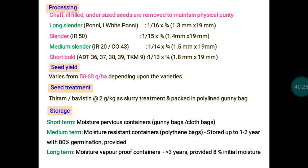In paddy, different grain types exist: long slender, medium slender, and short bold. In Tamil Nadu, long slender is the most preferred for consumption — examples include Ponni and Improved White Ponni. Long slender grain dimensions are 1.3 mm × 19 mm. Short bold type, commonly called 'gundu rice' in Tamil, is most preferred in Kerala. Seed yield is around 50 to 60 quintals per hectare (5,000–6,000 kg per hectare) in 180-day varieties.